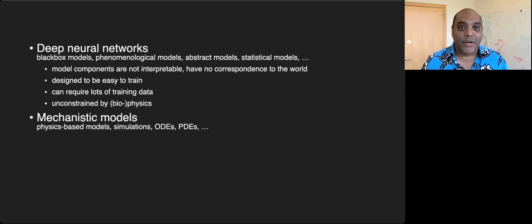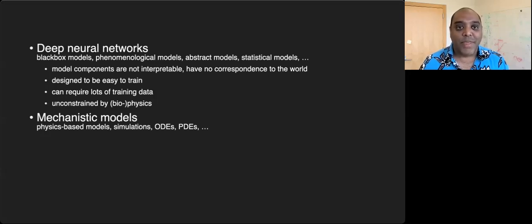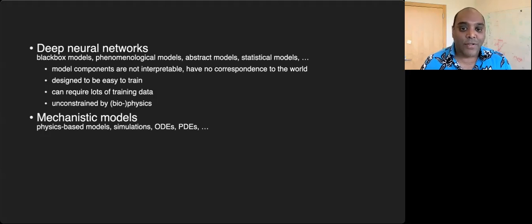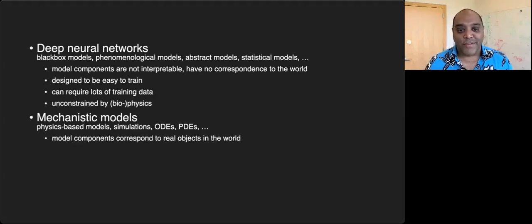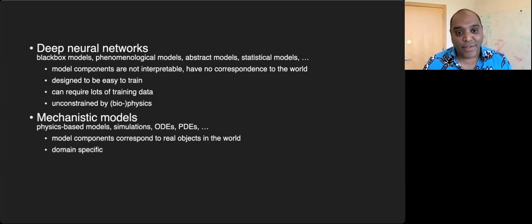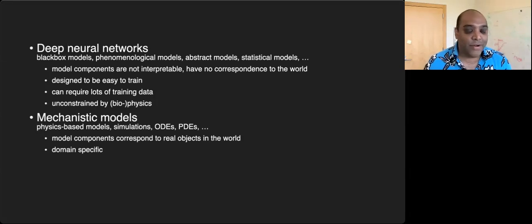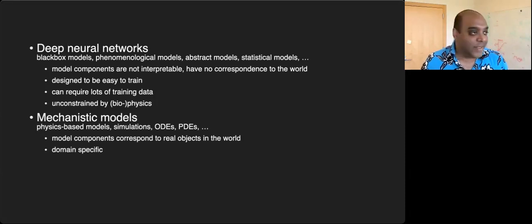In contrast, mechanistic models are the kinds of models people build in physics, chemistry, and biology. These are models where we're trying to model something in the real world — you can call them simulations of the world. They're composed generally of ordinary or partial differential equations. The components have a clear correspondence to the real world and are easily interpretable. They're domain specific — not general purpose function approximators. A model built in physics to model fluid is really just our understanding of how fluid works.